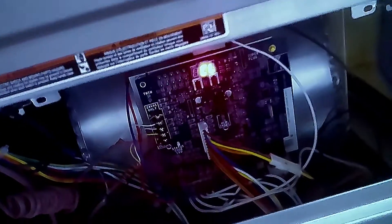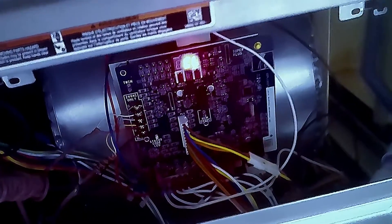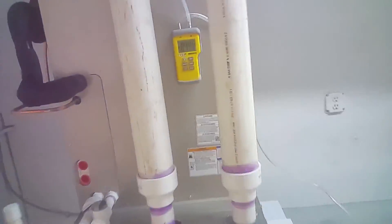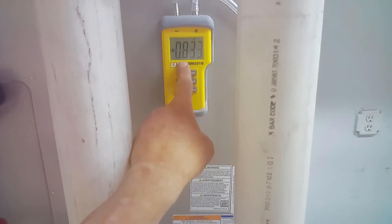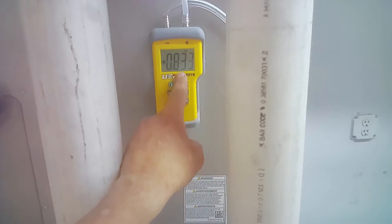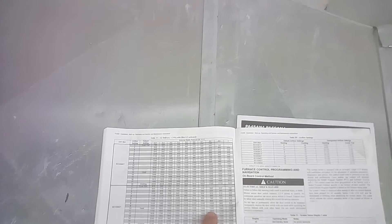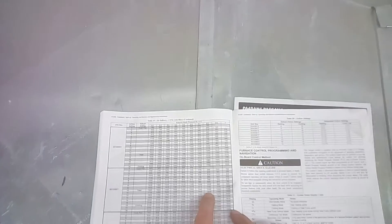We'll go ahead and let it run again and recheck the static pressures. Our system started back up and our static pressure is down to 0.83. At 0.8 static on setting 11, we're at about 1,400 CFMs — that's about 400 CFM per ton for a 4-ton unit, so right between 1,200 and 1,600. That's where we want to be: 1,400 CFMs at 0.8 static pressure.